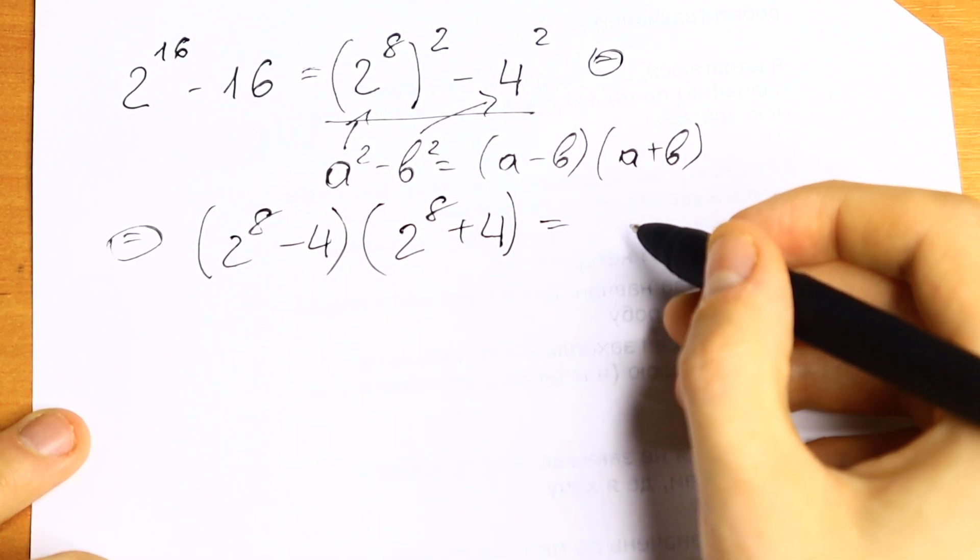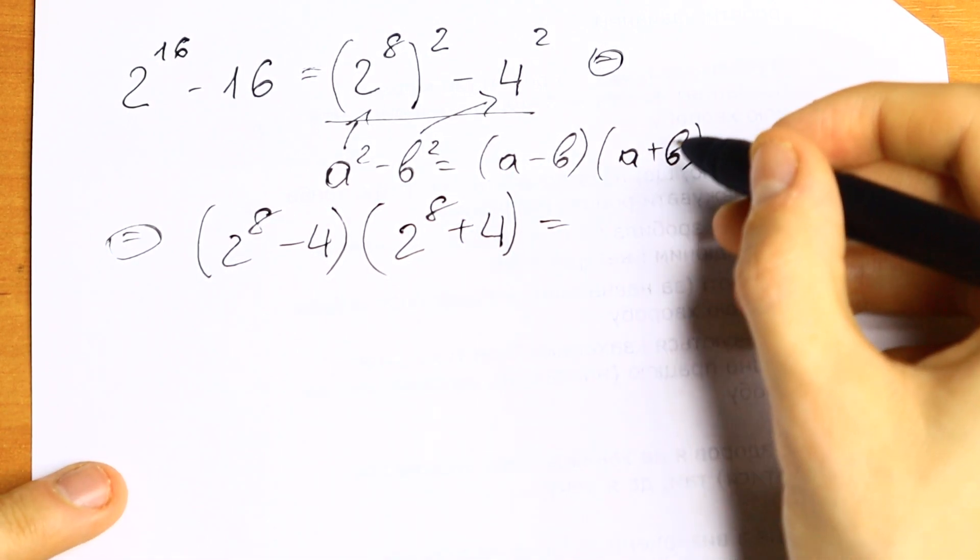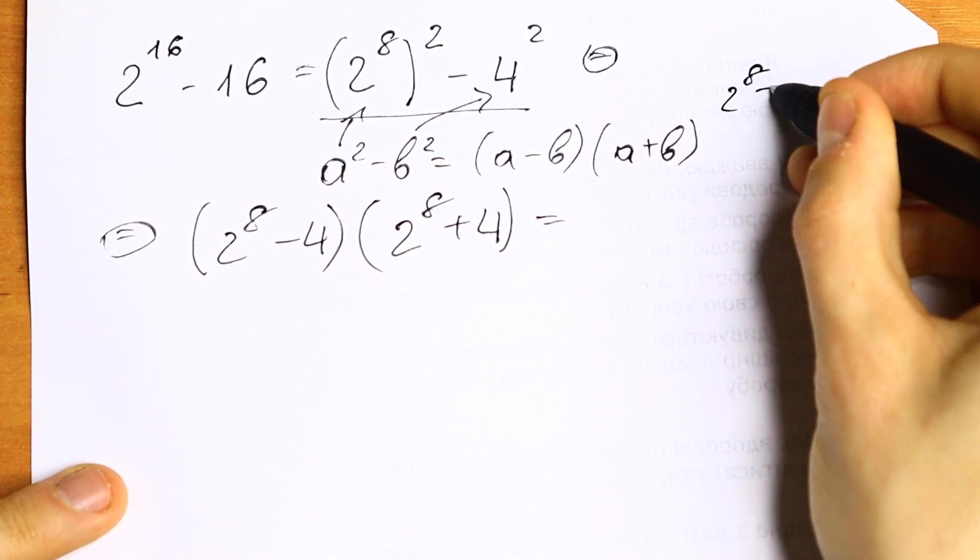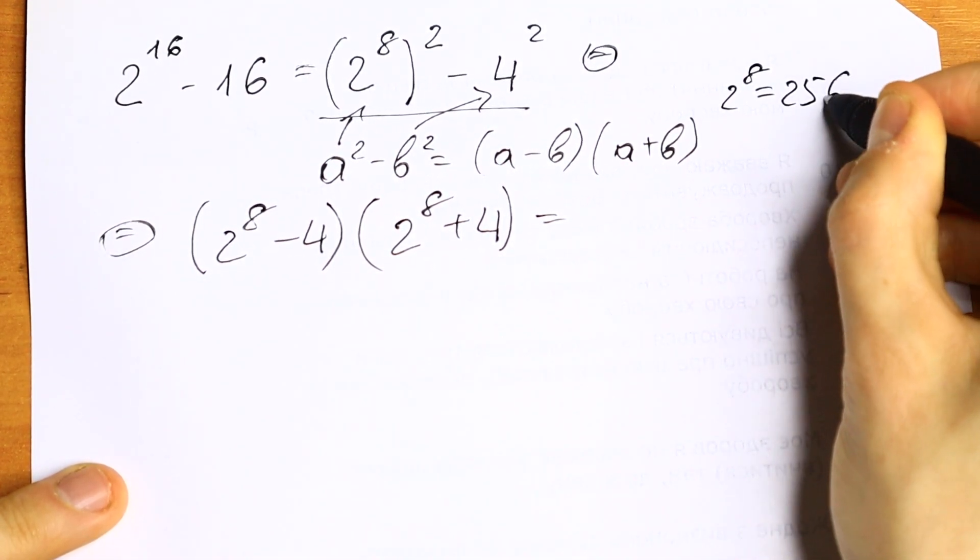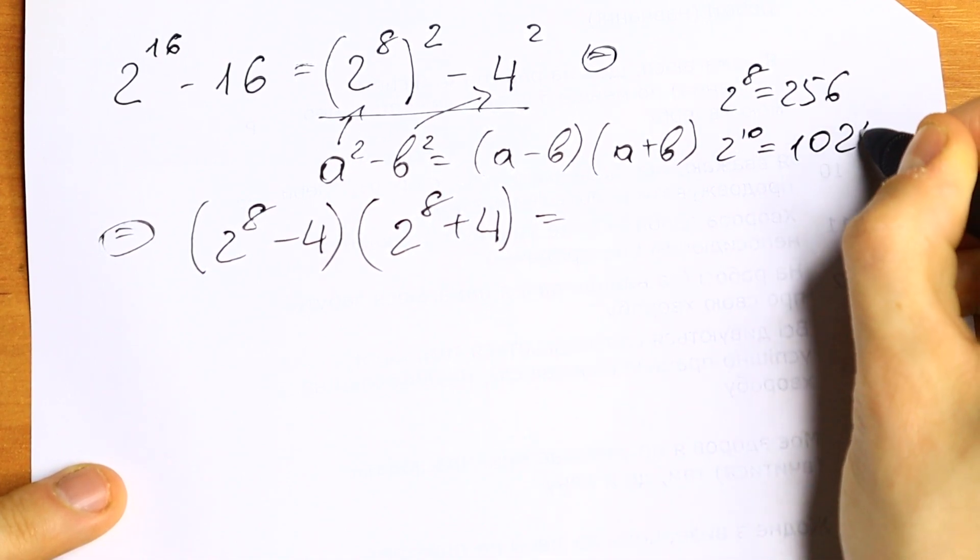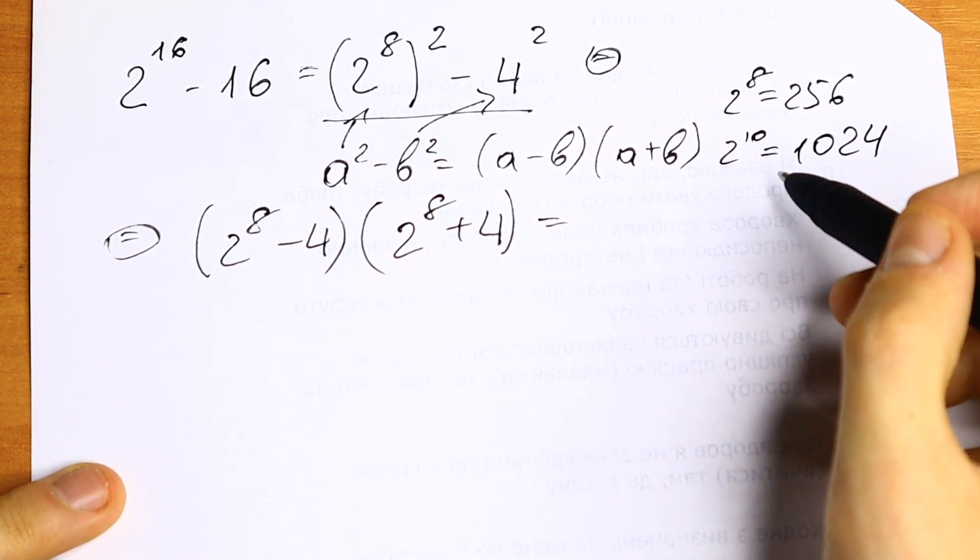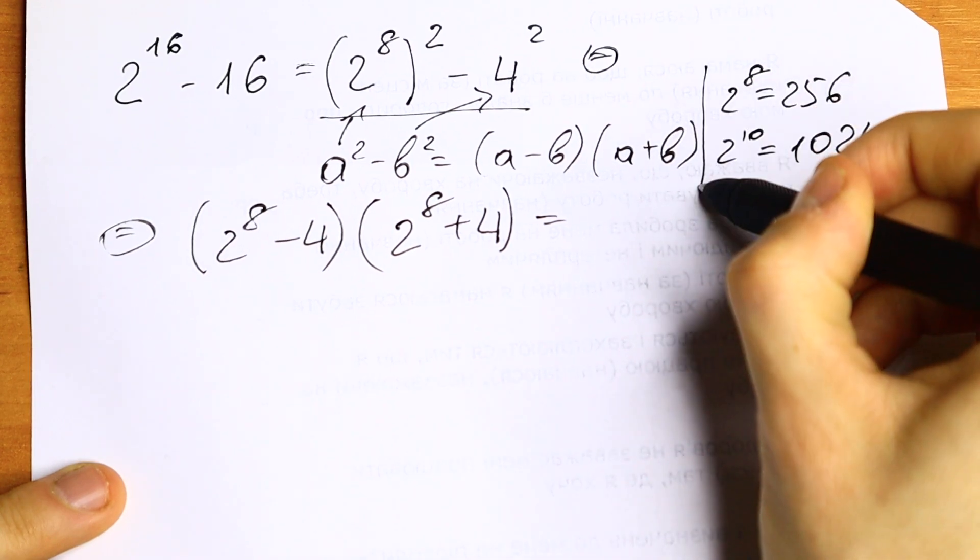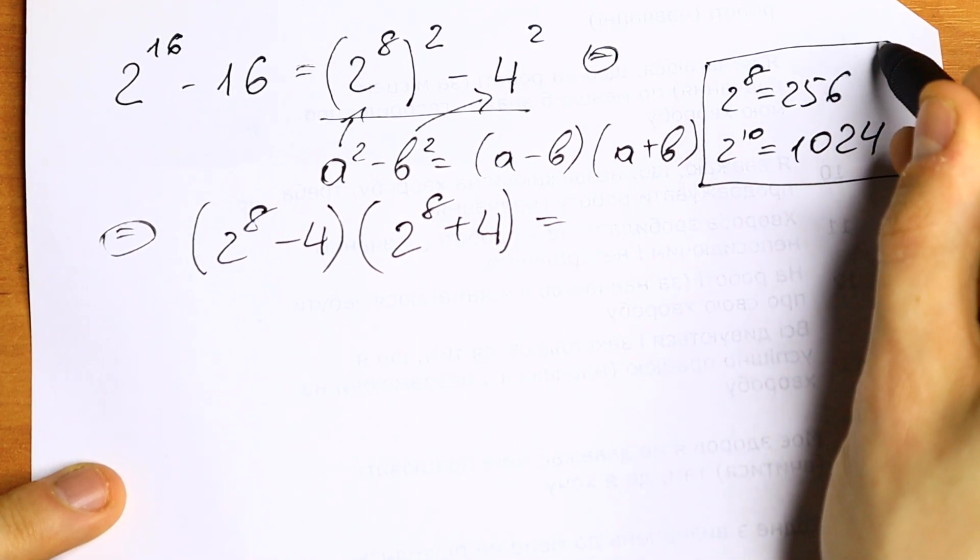We all know that 2 to the 8th power will be equal to 256, because we know that 2 to the 10th power equals 1024. It's really good to know these cases, so learn this or remember this.